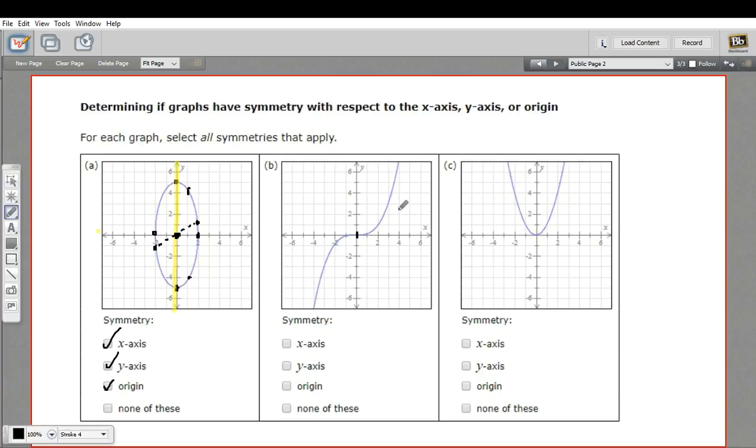Let's think about this. So if we started rotating this around the origin 180 degrees, what we'd see is this arm would end up right where this arm is, and this arm would end up right where this arm is. And it would be the same figure. So this one has origin symmetry.